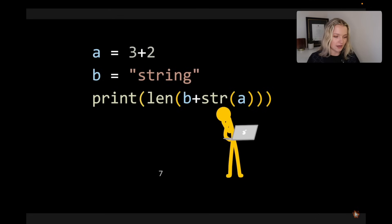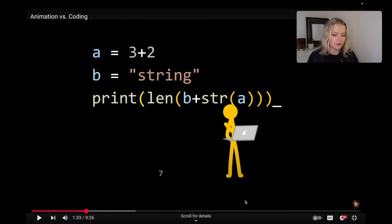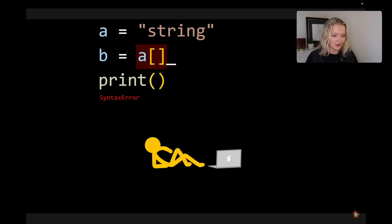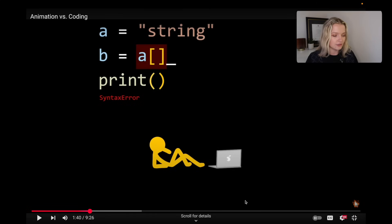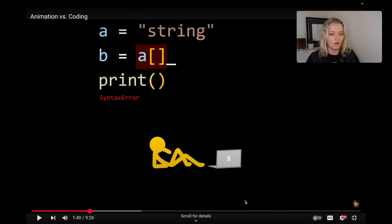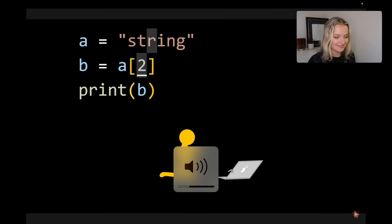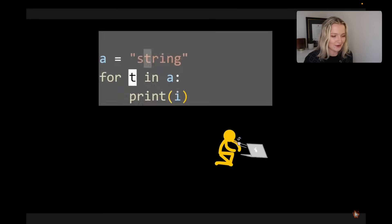Now we're counting the length — how many characters are in that string. 'String' itself has six characters, plus the five makes seven. Nice — this is a great introduction to Python for beginners. Right, now what he's done is try to index the string, and because of the syntax error in Python you'd have to put the variable name, then square brackets, then zero or however many elements there are. Put zero and that'll give him 's' back — there we go, nice.